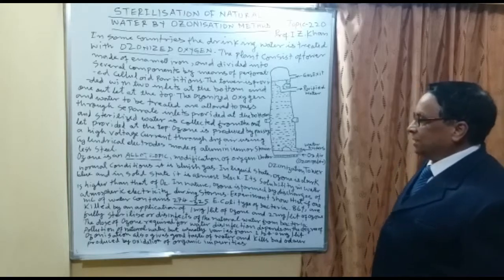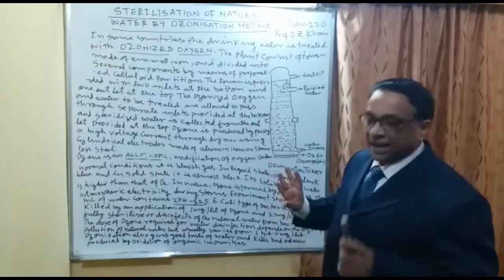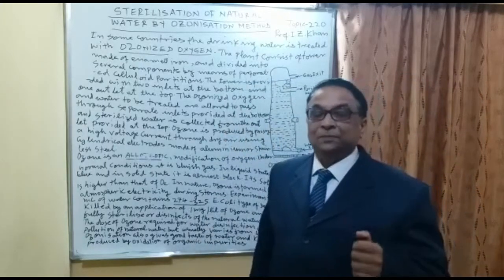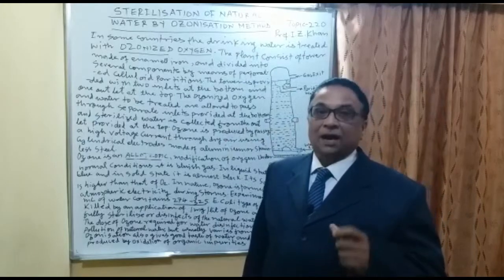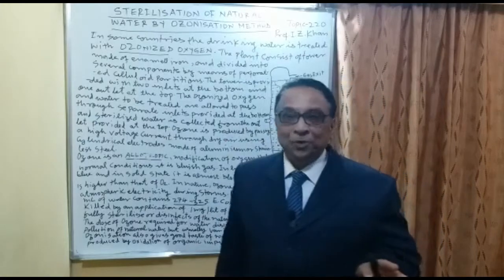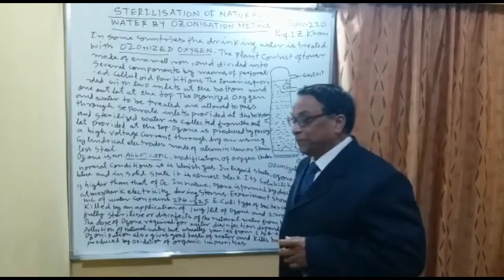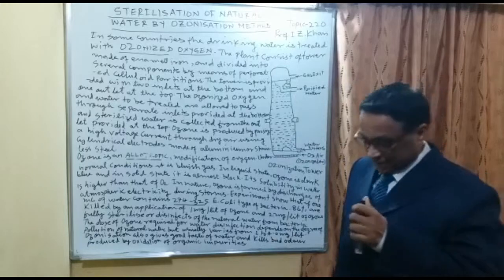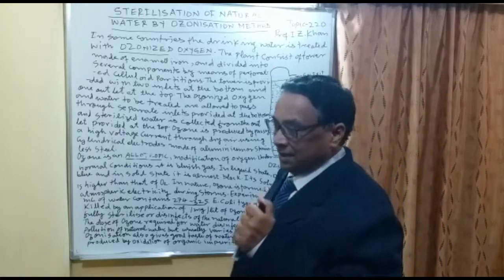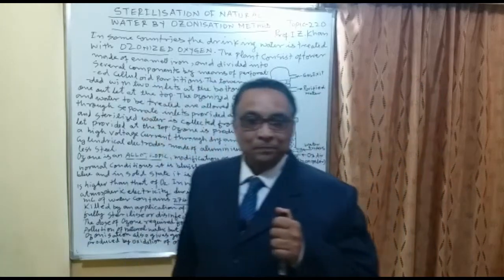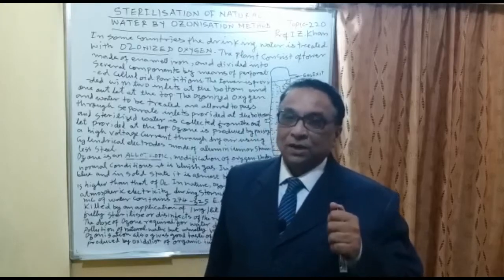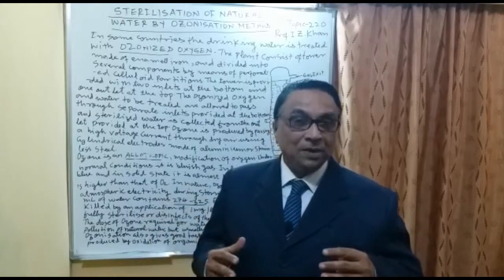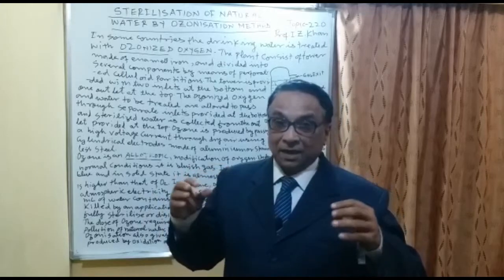Ozone is produced by passing a high voltage current through dry air using cylindrical electrodes made of aluminum or stainless steel. The production of ozone is very costly — that is the biggest disadvantage of this process, and many poor countries cannot afford the purification of water by ozonization.